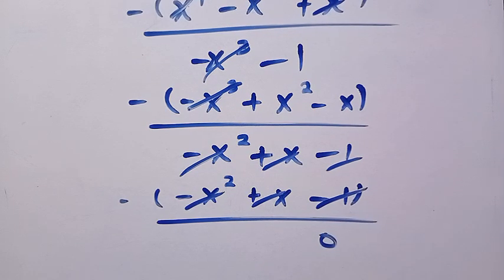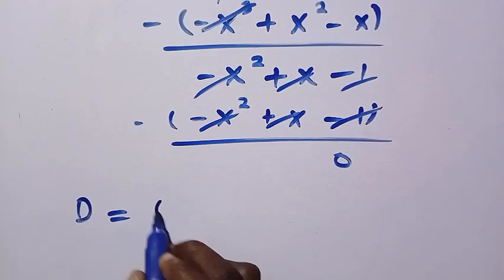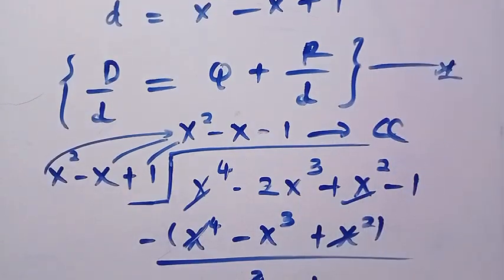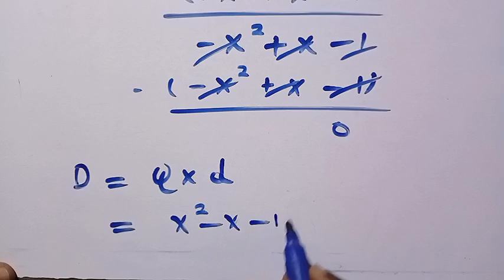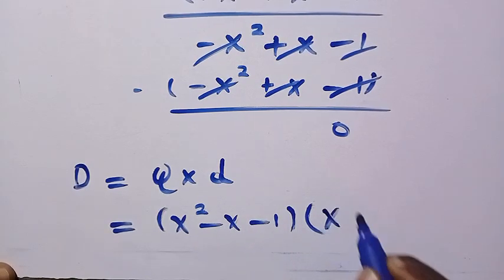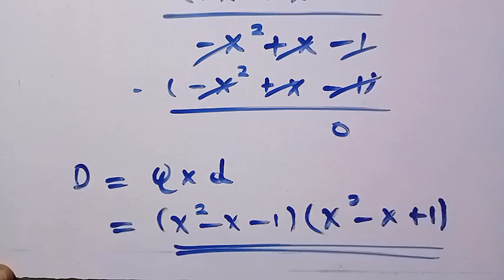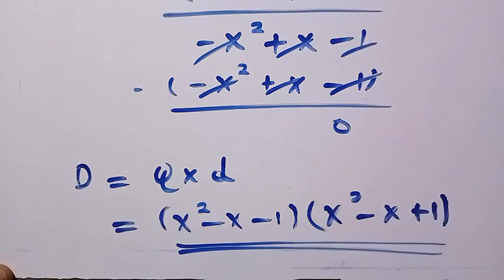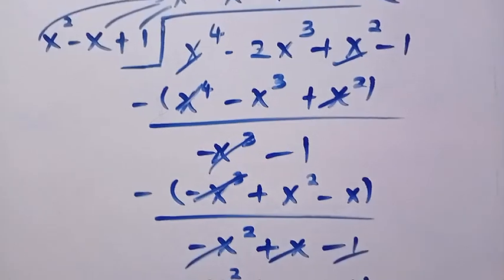Since the remainder equals 0, dividend equals quotient multiplied by divisor. Combining all quotient terms gives x squared minus x minus 1, multiplied by x squared minus x plus 1. This matches the factored form from Method 1. Plugging everything back into the function gives the same answer: f of x equals x squared minus 2x. Thanks for watching, don't forget to subscribe, and see you in the next video. Never stop learning!